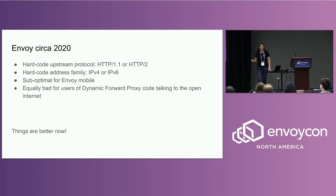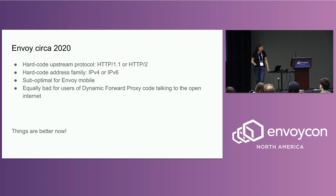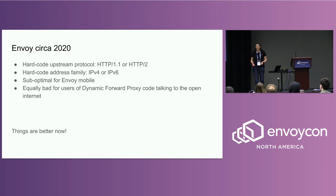When we joined this project, it was clear to me that the Envoy network stack had really been written for use in data centers. You had things like having to hard-code your upstream protocol. In your data center, you know if your endpoints are speaking HTTP1 or HTTP2. But when you're working on the open internet, that's generally not how things work. Also, you roughly had to hard-code the address family.